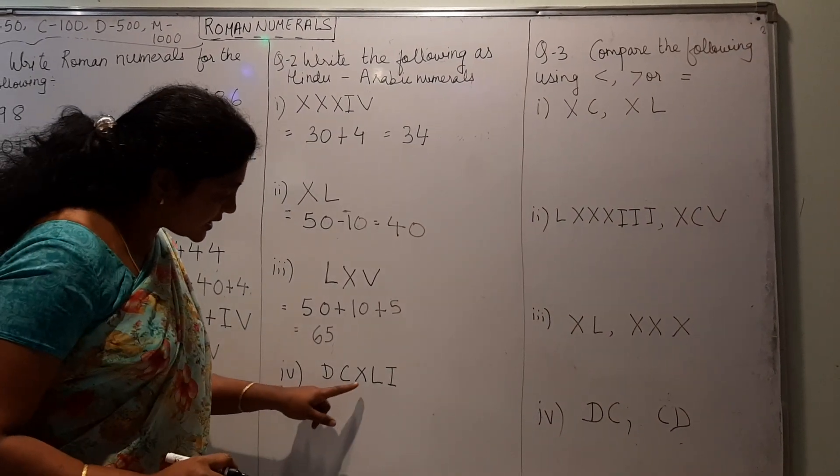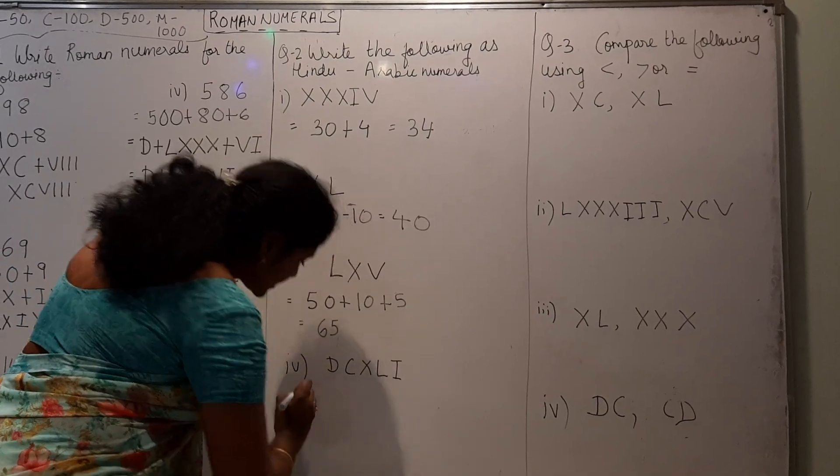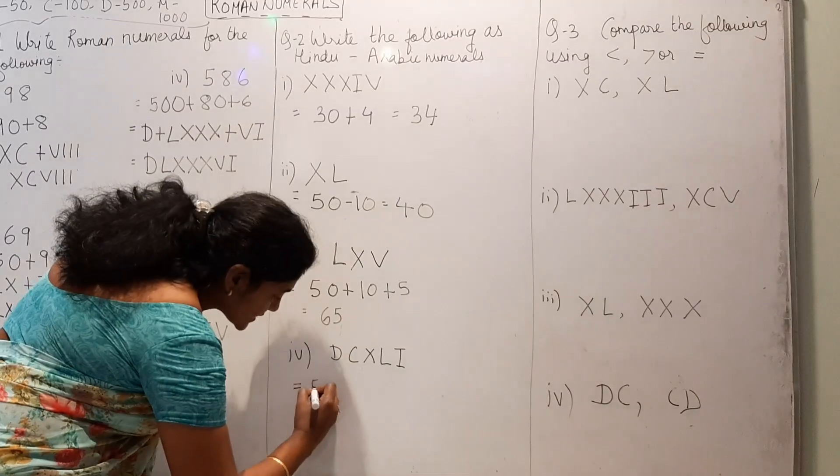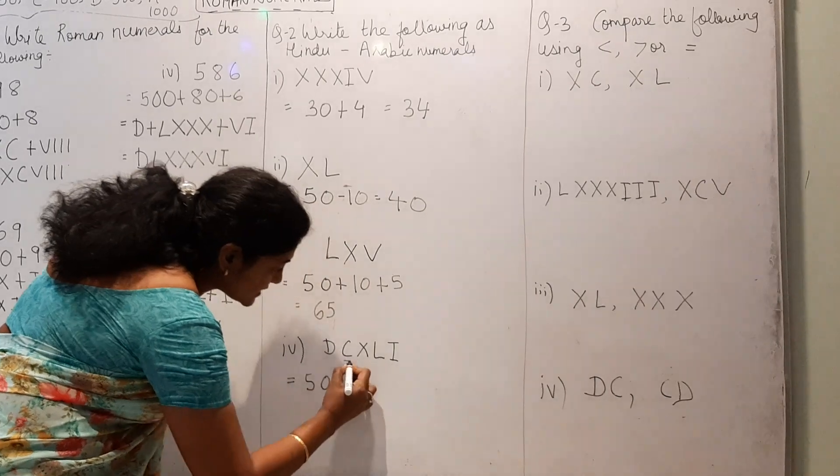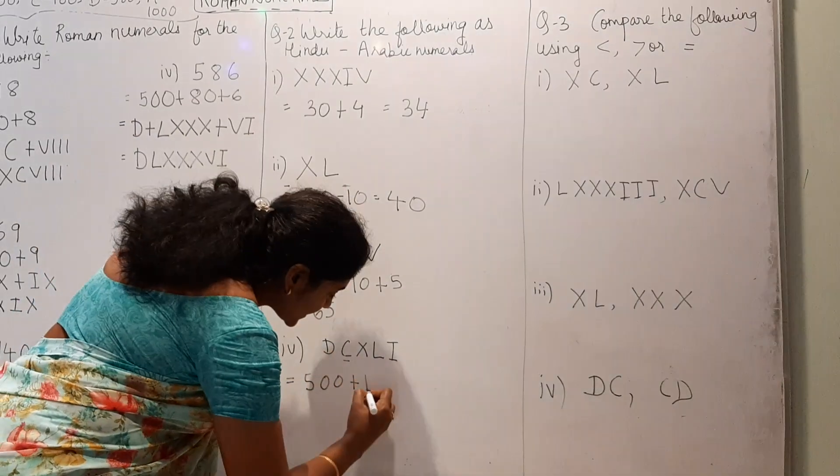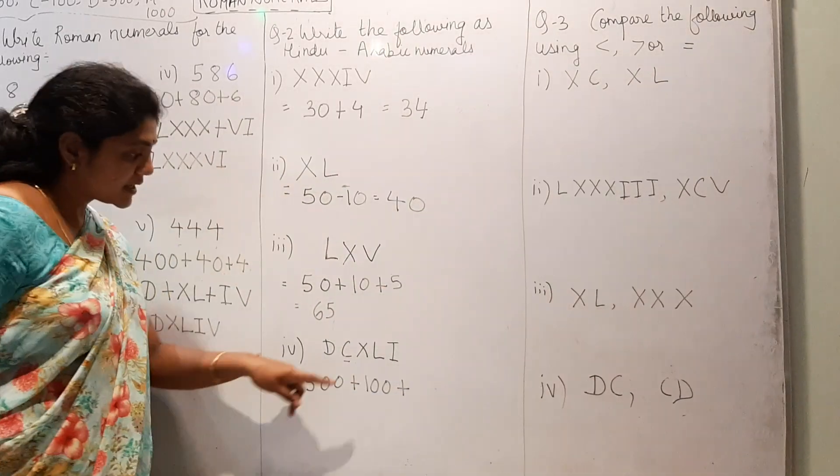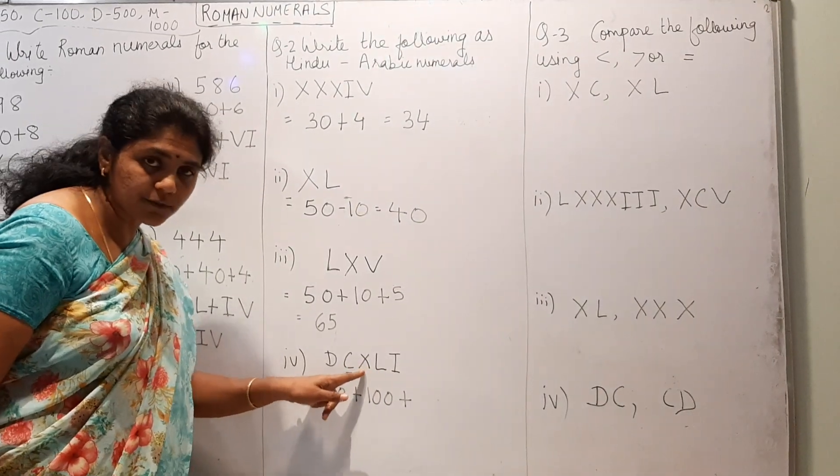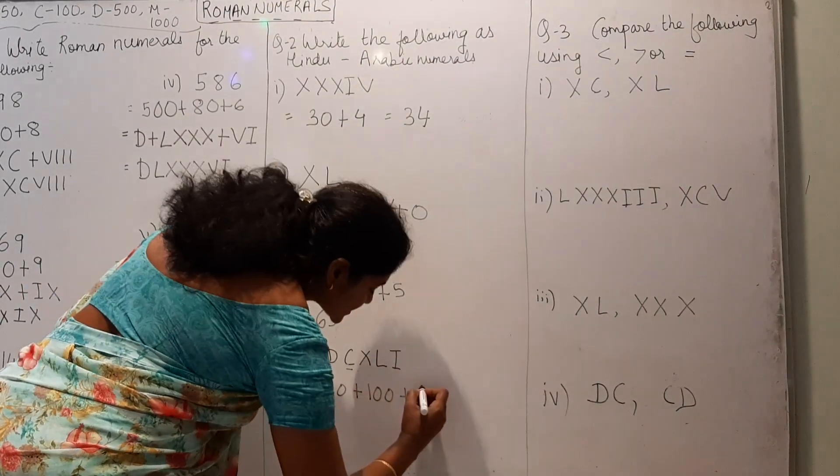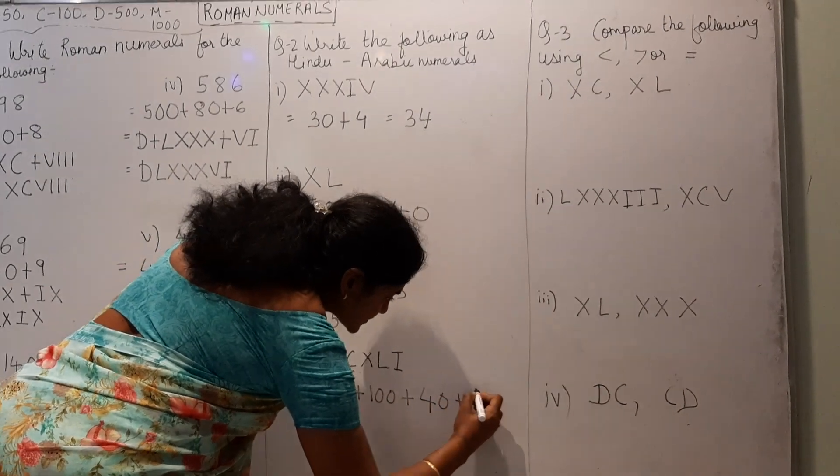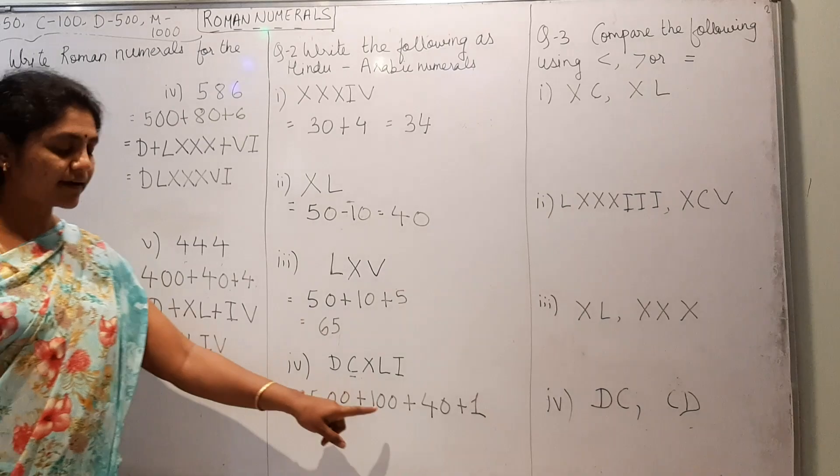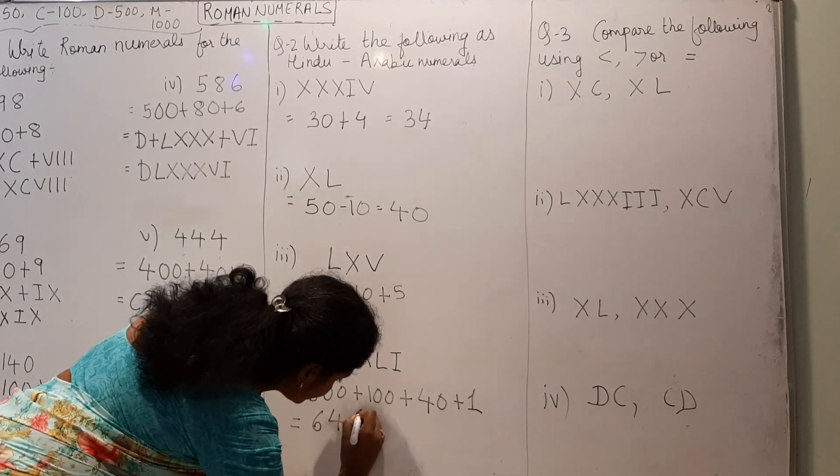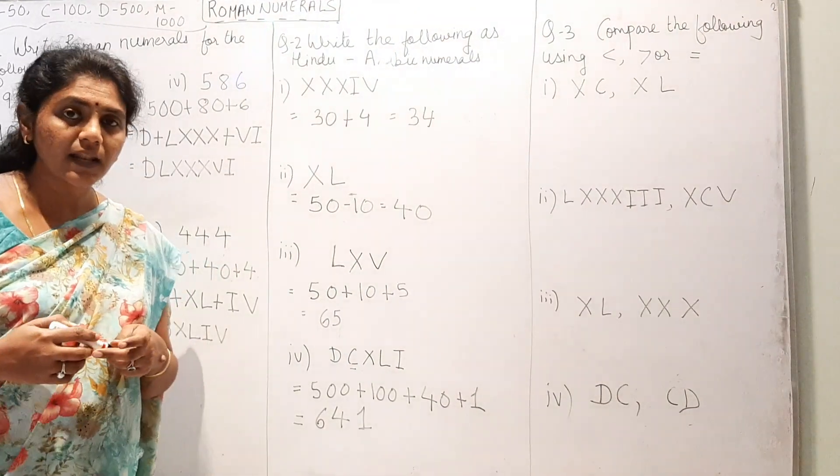Now, DCXLI. D as you know, it is 500. So, I will write as 500 plus C is 100. Plus, XL. 10 and this is 50. 10 is written to the left. Means, it will get subtracted. So, 50 minus 10 is 40 and I is 1. So, 641. Your answer will be 641.